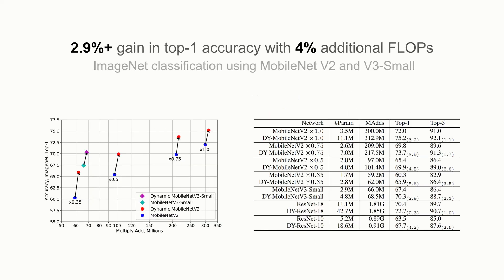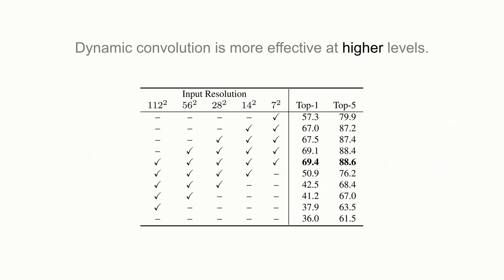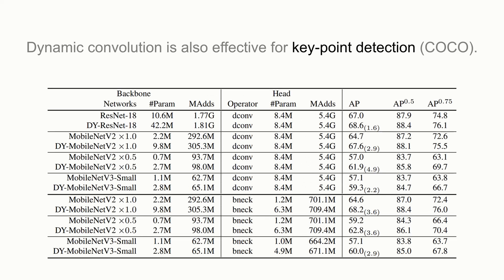Here are some main results. Our method gains 2.9% top-1 accuracy with only 4% additional FLOPs on ImageNet classification using MobileNet. The dynamic convolution is more effective at higher levels than lower levels. And dynamic convolution is also helpful for keypoint detection.